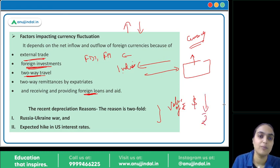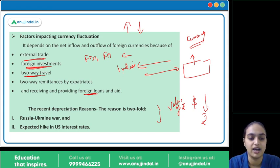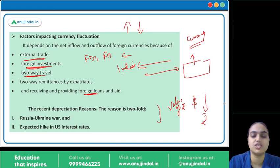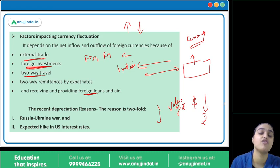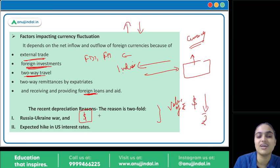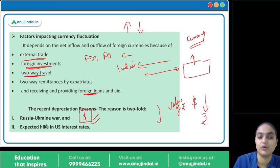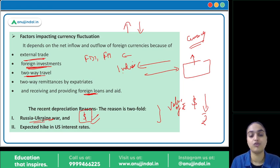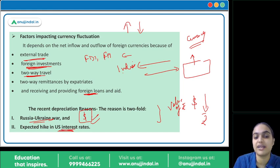There are two major reasons behind the current rupee fall. First is the Russia-Ukraine war. Because of the ongoing conflict, trust is falling and investors want to move to safe havens. They are taking away investments and preferring safe currencies — and that seems to be the dollar. So the dollar's value appreciates, demand for rupees falls, and rupee depreciates.